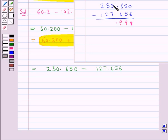Then 9 minus 7 is 2, and 2 minus 1 is 1. So this would be equal to 102.994.